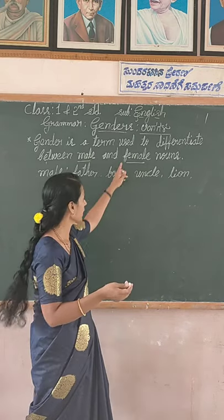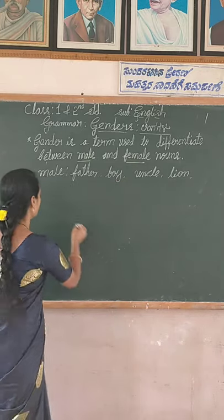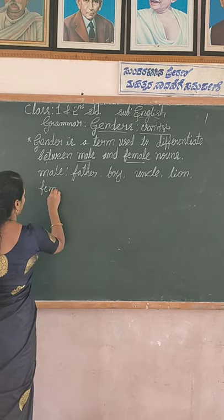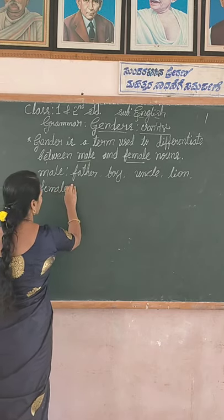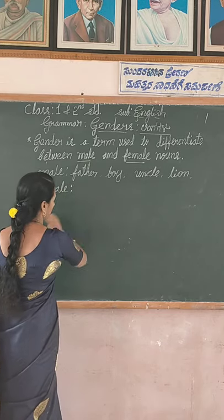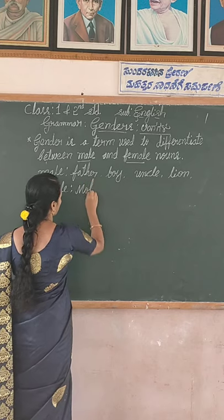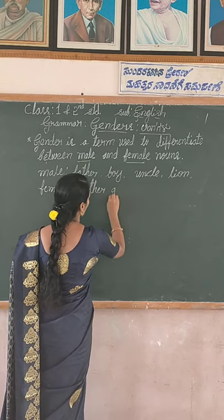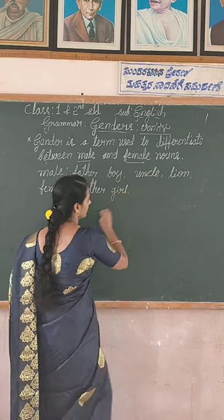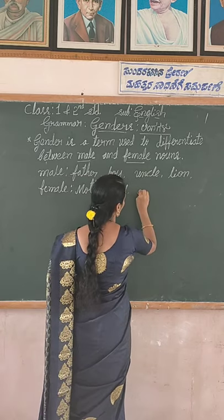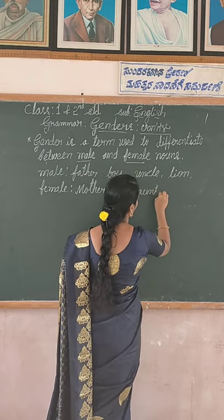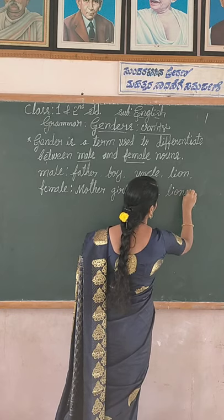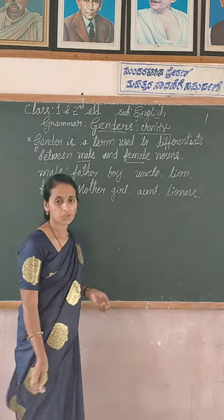Lion. Female — say female. Female means: mother, M-O-T-H-E-R; girl, G-I-R-L; aunt, A-U-N-T; lioness, L-I-O-N-E-S-S. So, students, those are the male and female words.